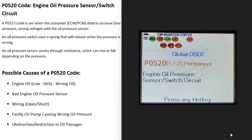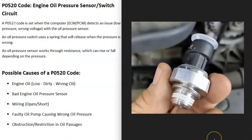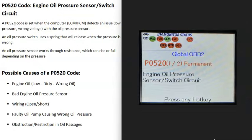Today I'm talking about a P0520 code — what it is and how you go about fixing it. A P0520 code is an engine oil pressure sensor/switch circuit code. Basically, there's a sensor or switch monitoring the oil pressure inside the engine, and the computer is seeing some kind of problem with it. Depending on the vehicle, the year, and the make, it could be using an oil pressure sensor or a switch, but either way they're both monitoring the oil pressure inside the engine.